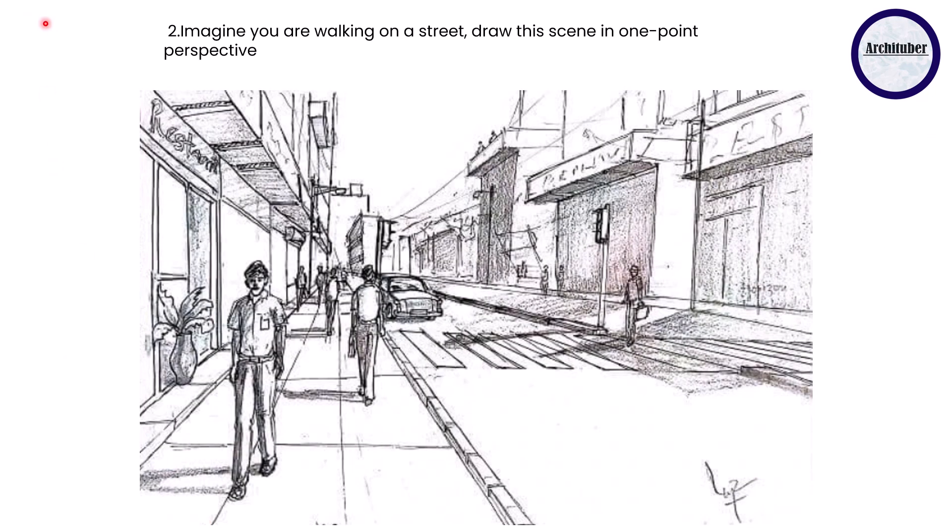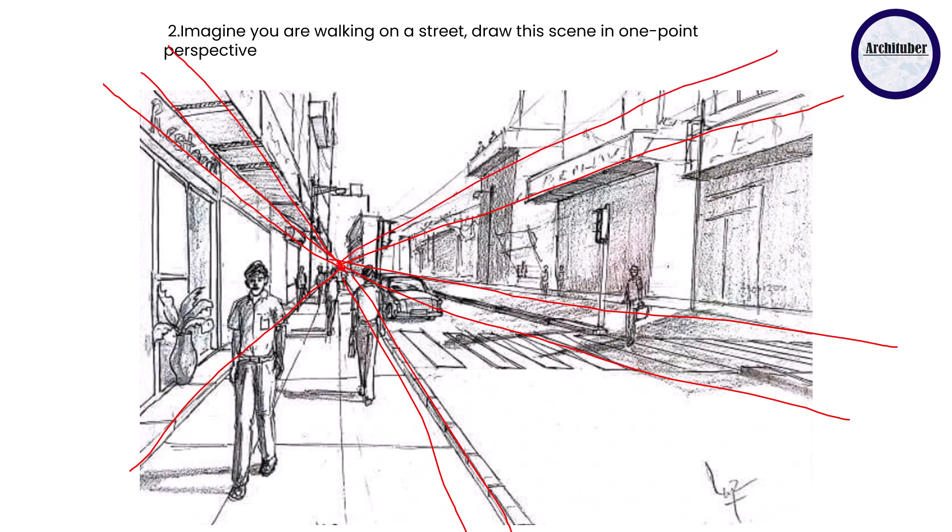Then the second question: imagine you are walking on a street, draw this scene in one point perspective. Again it is a one point perspective - the point is somewhere here and then you have all these lines. One point perspective is very easy. I already have a video on that so you can refer to that video or you can simply try it for yourself and try to make such kind of scenes. This is a very easy question. That's why I always ask you to draw human figures, then trees, cars - these are the objects you'll be needing for such kind of a question.